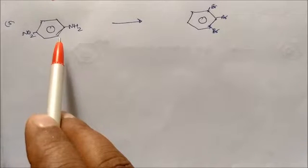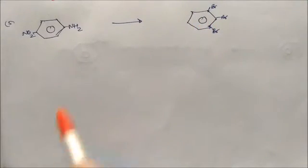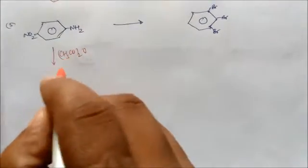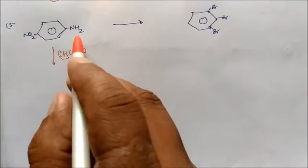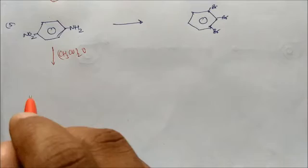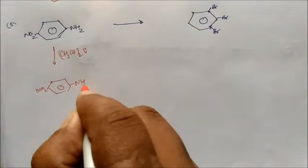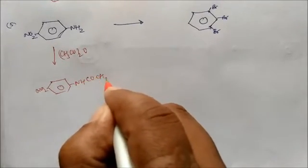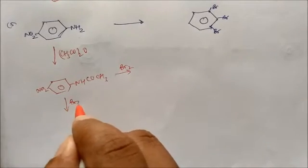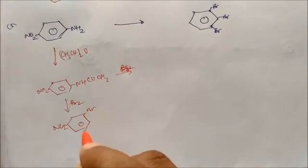Next is 4-nitroaniline to 1,2,3-tribromobenzene. Start with acetic anhydride (CH3CO)2O to block the NH2 group, converting it to NHCOCH3. Without blocking we cannot proceed, since NH2 is an ortho-para director. The NO2 remains. Now do bromination with Br2 — you get Br substituents at two positions adjacent to NHCOCH3.